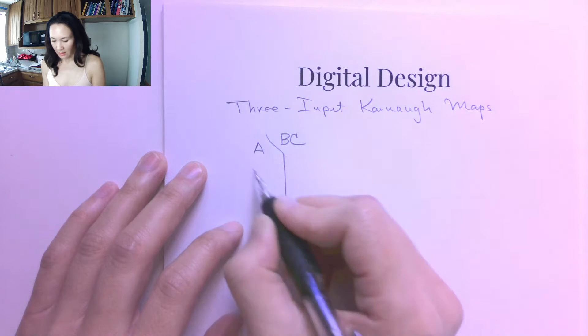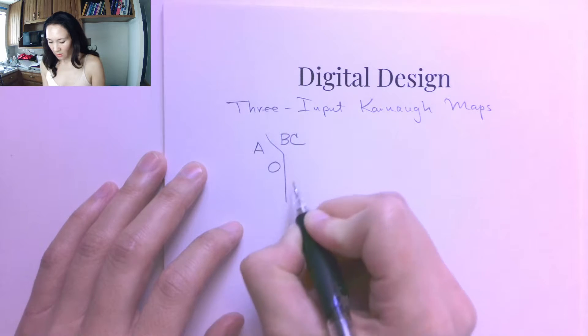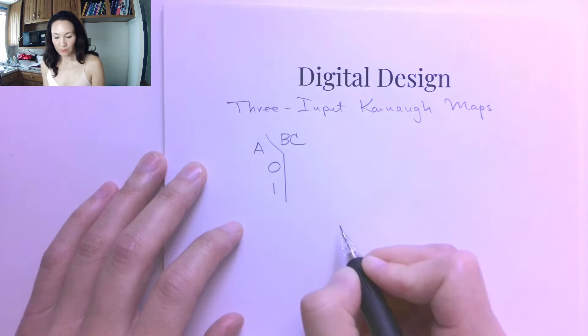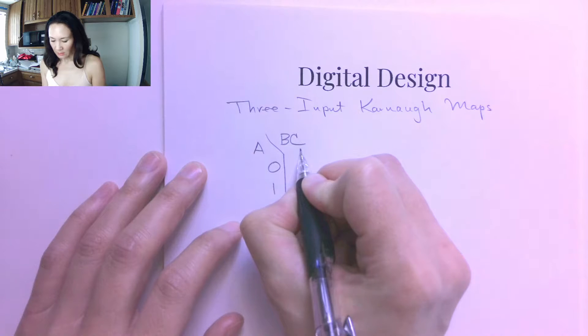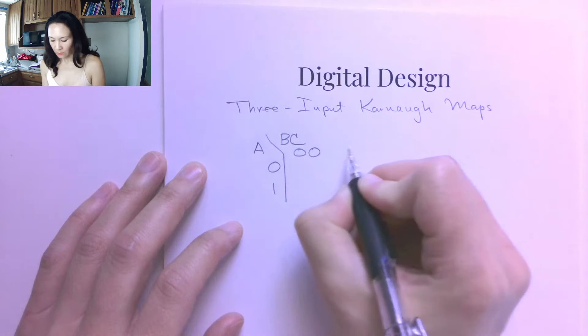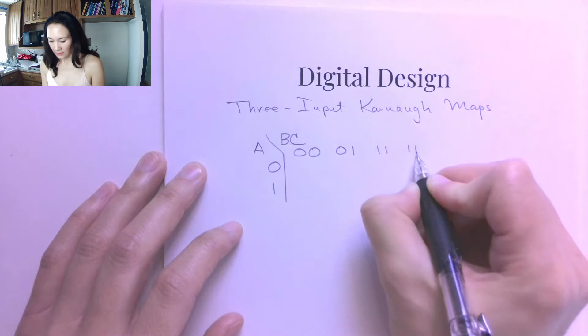So then my input combination, my input possibilities for A, A can be either 0 or 1. And then for B, C, the input combinations can be either 0, 0, 0, 1, 1, 1 or 1, 0.